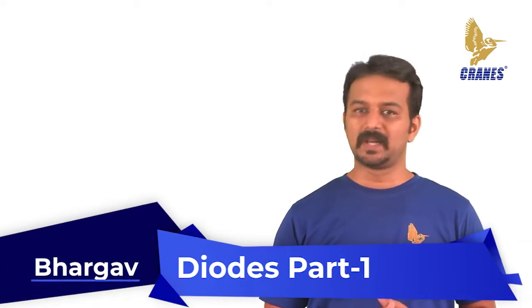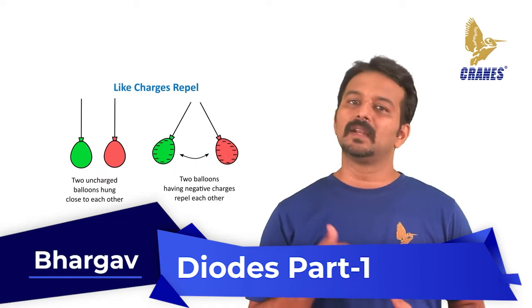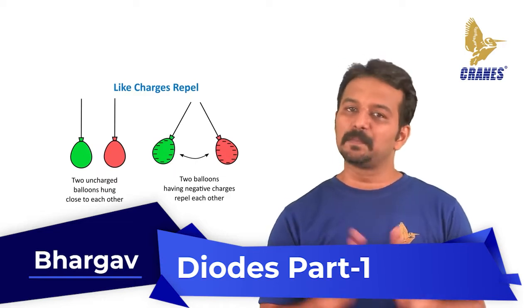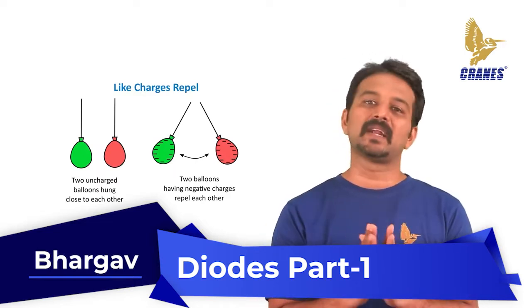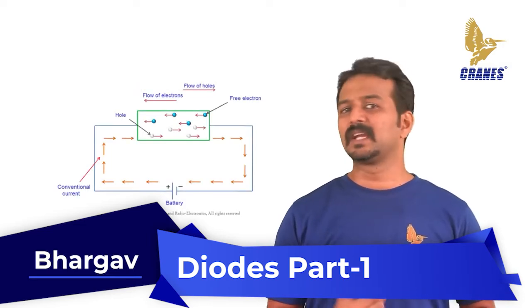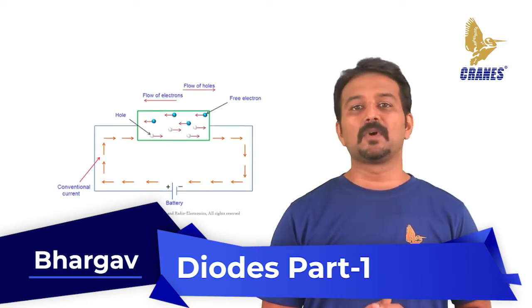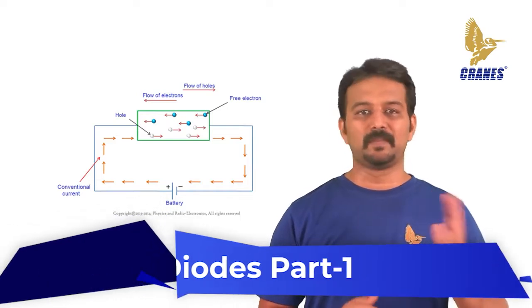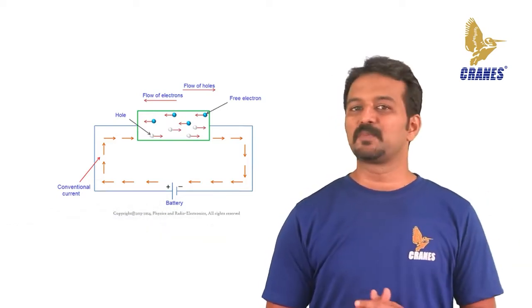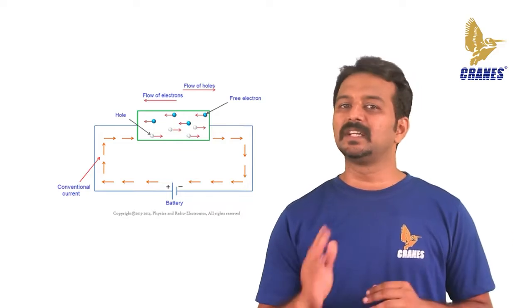The electrons are negatively charged particles and the holes are positively charged particles. As we have already discussed, like charges repel each other and unlike charges attract each other. Hence the electrons, being negatively charged particles, get attracted towards the positive terminal of the battery, and the holes, being positively charged particles, are attracted towards the